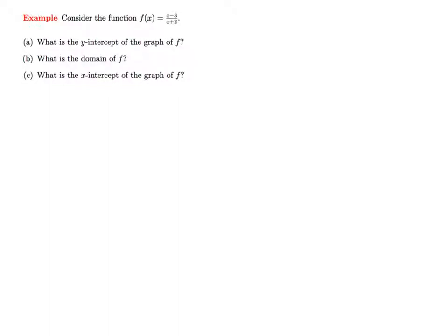In this example, we are given a rational function f of x, which is x minus 3 over x plus 2, and we're asked to identify some key properties such as the intercepts, y-intercept, the domain, and x-intercepts.